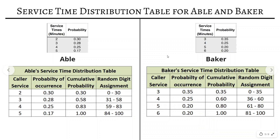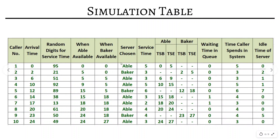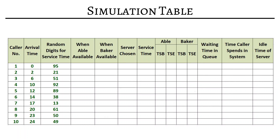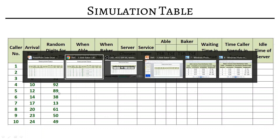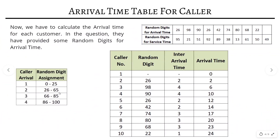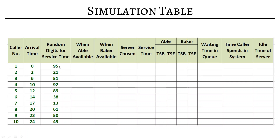Normally in other problems we calculate service time next, but here we will not, because we never know at what interval of time which server will be chosen. So we will directly start the simulation table, which contains a lot of columns. Let's understand how we build this table. We have column numbers 1 to 10, arrival times, and random digits for service time assigned sequentially from a previous slide.